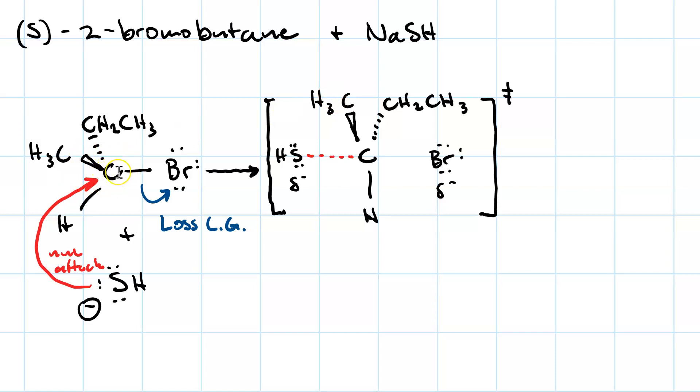As opposed to having the central carbon being shifted out of the plane in the substrate. Here is the bond that is breaking due to loss of a leaving group. We've got a partial negative charge on both the sulfhydride and the bromide. The attack of our sulfhydride on the left-hand side of the molecule shifted the methyl group and the ethyl group and the hydrogen over to the opposite side of the carbon, and caused the bromide to leave.